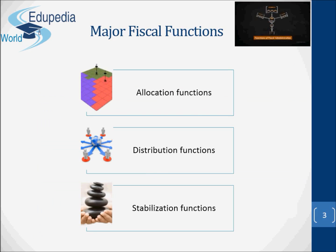According to Professor Musgrave, there are three major fiscal or budgetary functions of the government. They are the allocation functions, distribution functions, and stabilization functions.